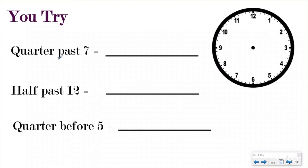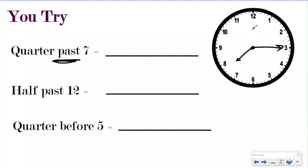So I have quarter past seven. I know a quarter is 15 minutes because it's one-fourth of the clock, and it's past seven, which means my hour hand is going to be past seven — somewhere in between seven and eight. Quarter past seven would be one-fourth past seven o'clock. So if it was seven o'clock, your hand would be right here, and you went 15 minutes past that. So your answer would be 7:15.